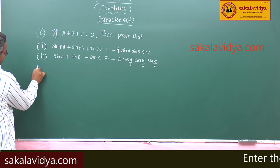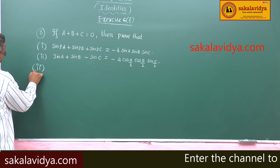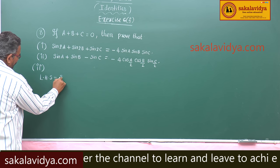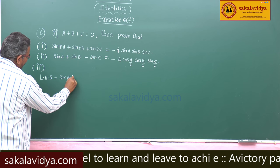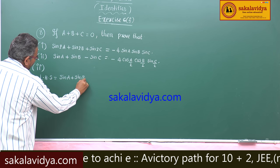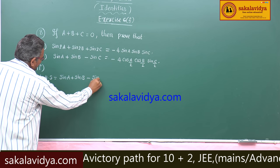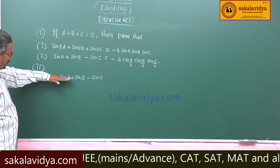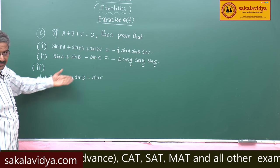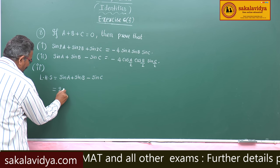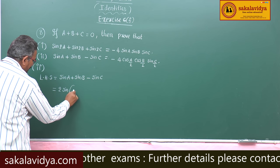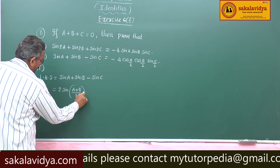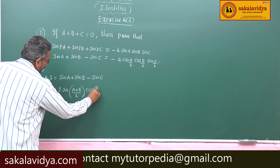Second problem: the left hand side is sin A plus sin B minus sin C. For sin A plus sin B, we apply the sum-to-product formula: 2 sin((A+B)/2) cos((A-B)/2).